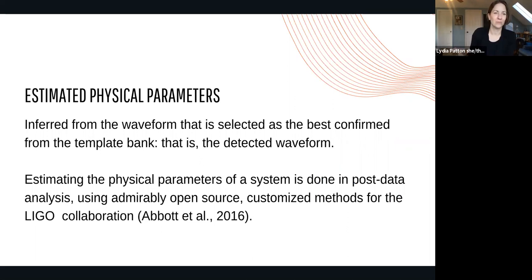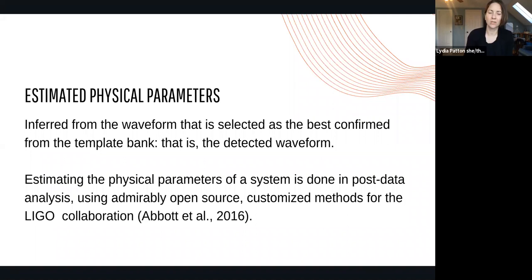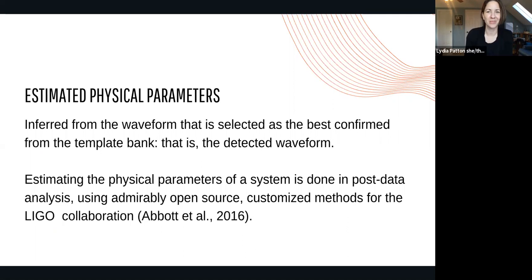The waveform selected as the best candidate is used as evidence for an inference to the properties of the system out there — this has obvious philosophical interest as the basis for an argument to the existence of systems with real properties. I also want to point out that the LIGO collaboration has been incredible about providing open-source and bespoke tailored methods for post-data analysis, which they encourage and train everyone to use and verify for themselves. This is something they've done admirably and should be a paradigm for others.